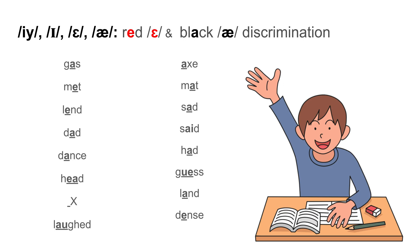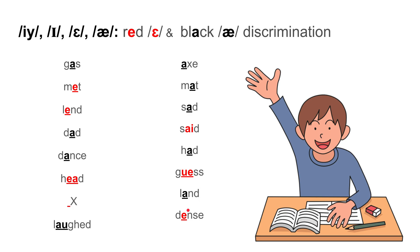We're going to do another listening discrimination. Raise your left hand if you hear red E, raise your right hand if you hear black E. Here we go: gas, met, land, dad, dance, head, X, laughed, ax, mat, sad, said, had, bad, guess, land, dance.